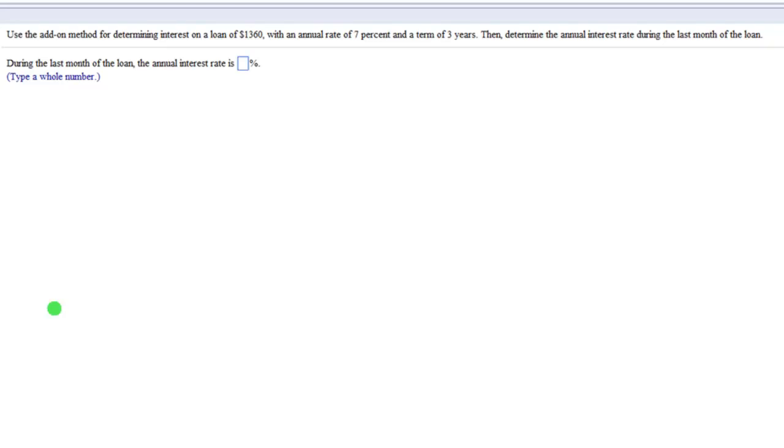Okay, so for this problem, we're using the add-on method to determine interest on a loan of $1,360 with an annual rate of 7% and a term of 3 years. They want us to determine the annual interest rate during the last month of the loan. The add-on method, remember these loans are the installment loans.